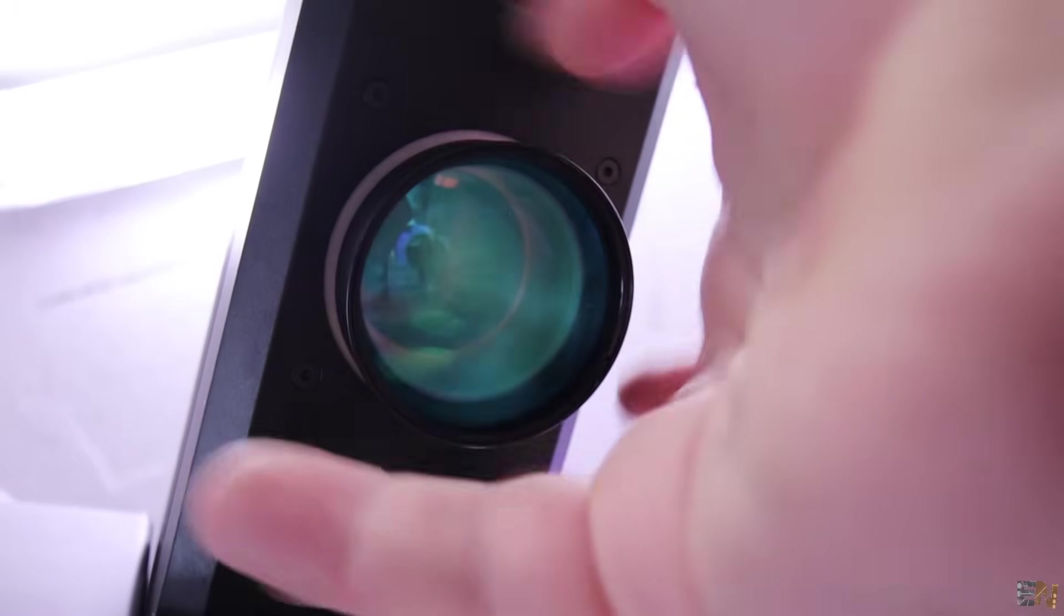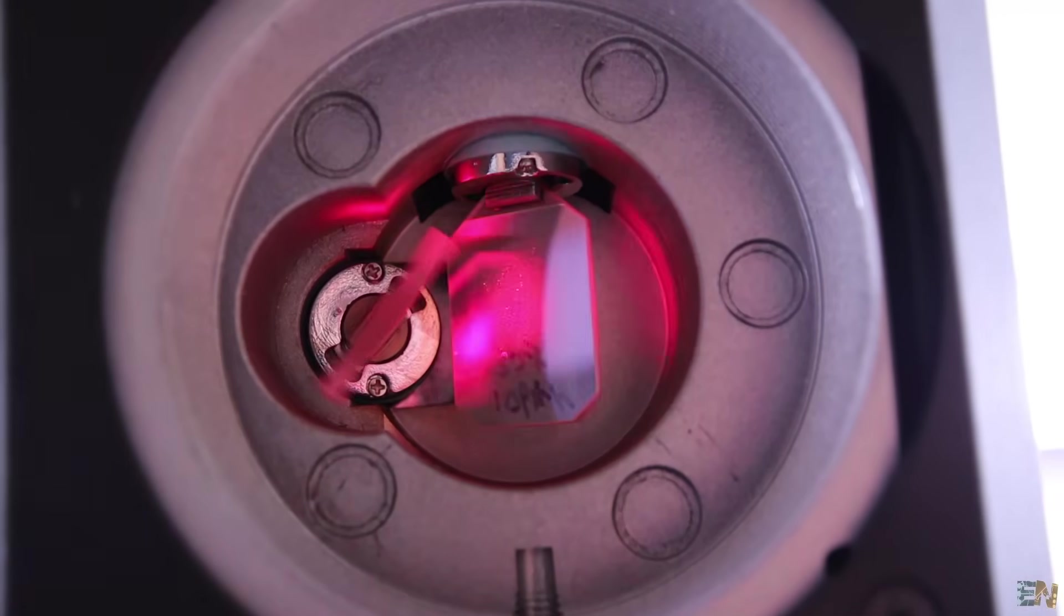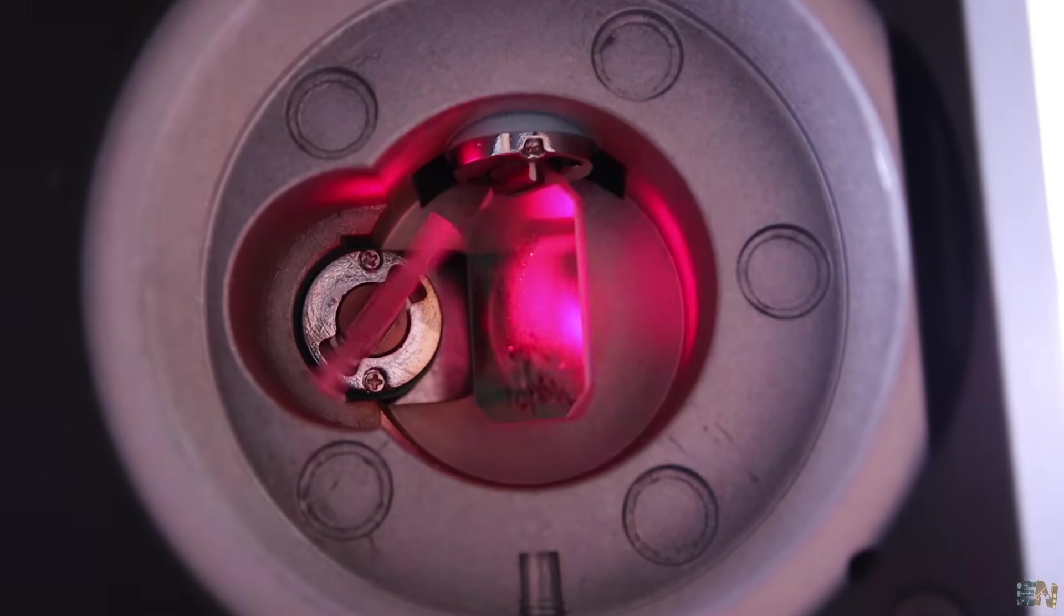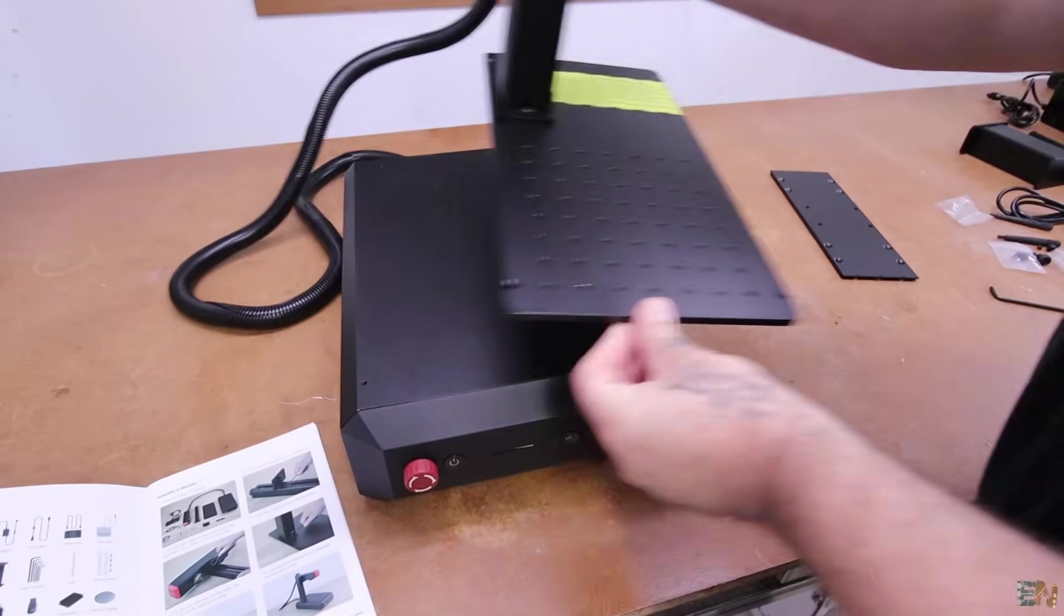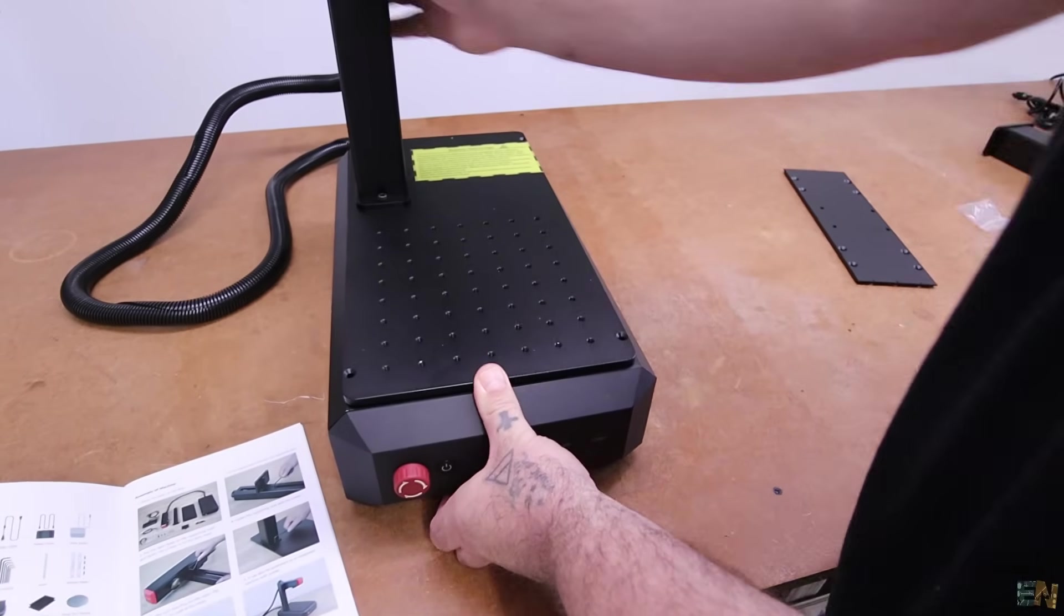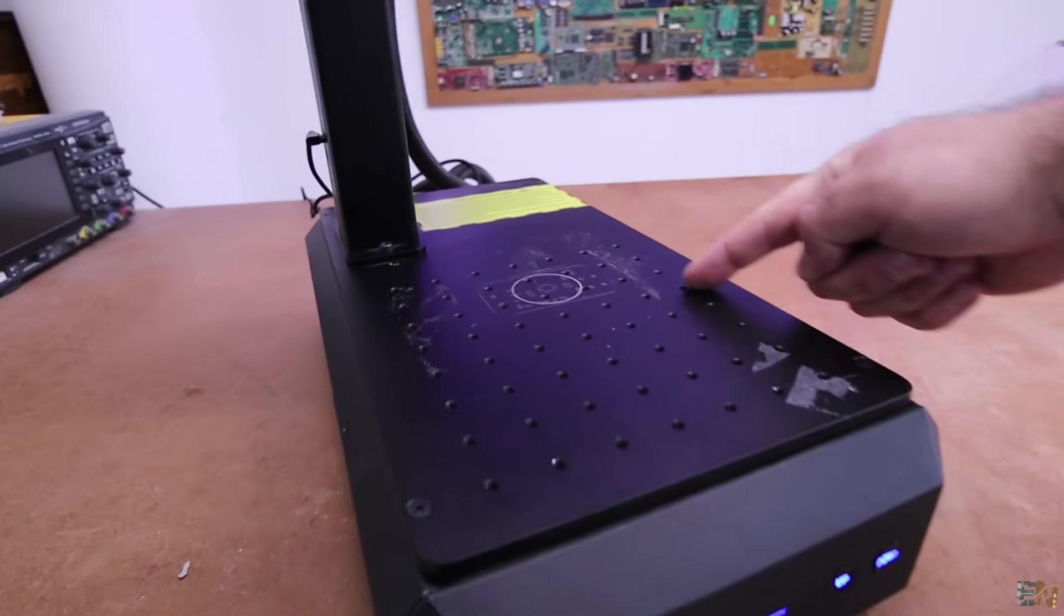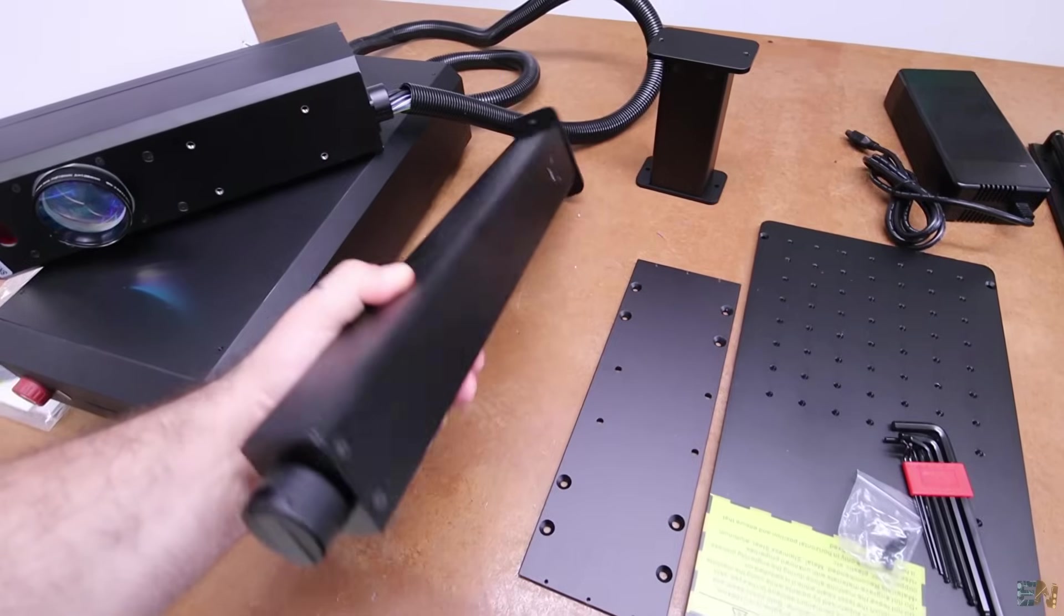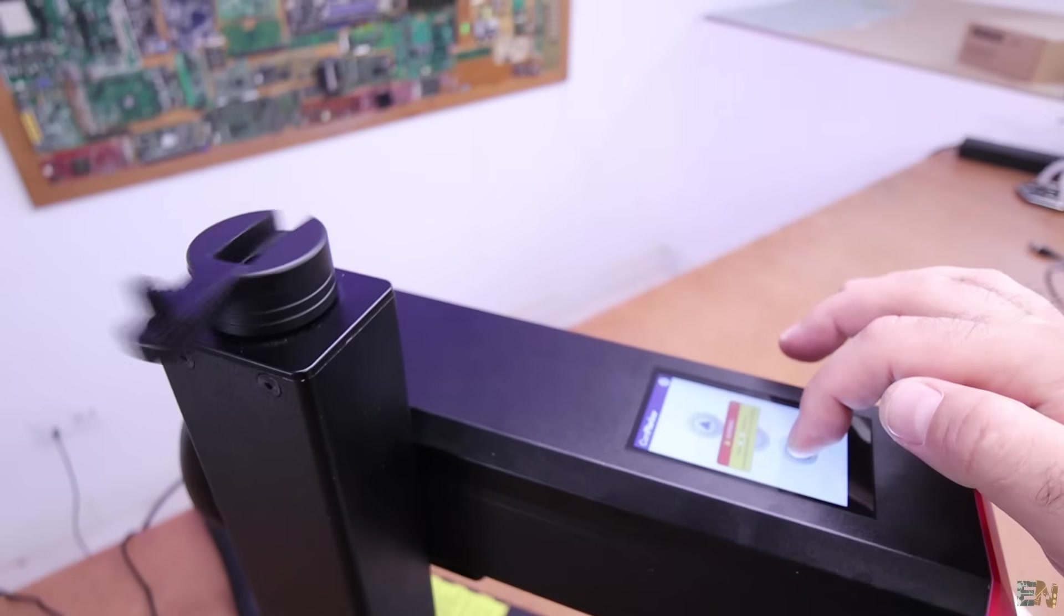Inside here we have the Galvano actuators and the mirrors and lenses. This time the body of the machine is kind of modular. You get this metal plate so you don't have to engrave directly on top of the machine as we had to do with the B4 model. We also have the Z axis and this time it has a stepper motor inside for the autofocus so it can move automatically.